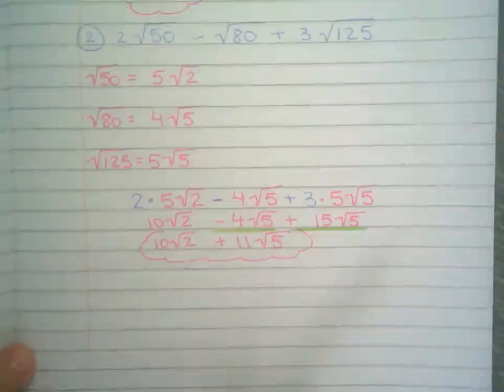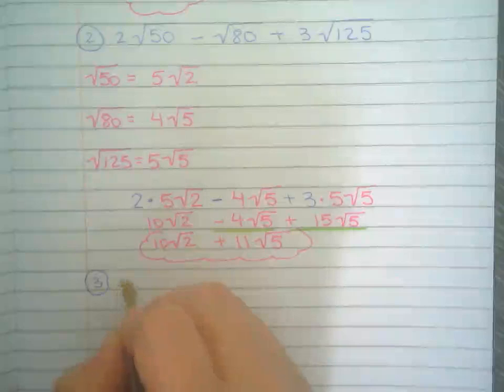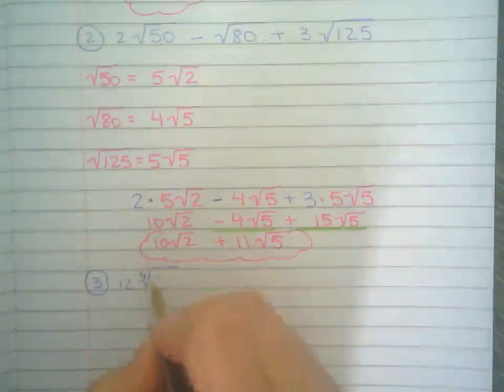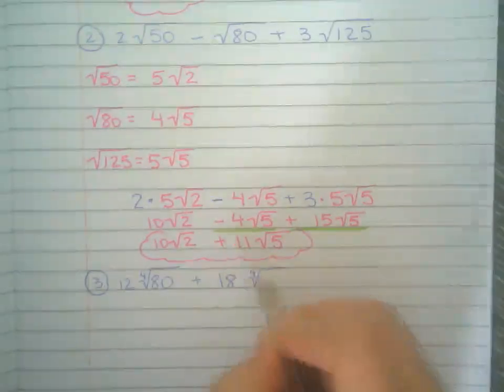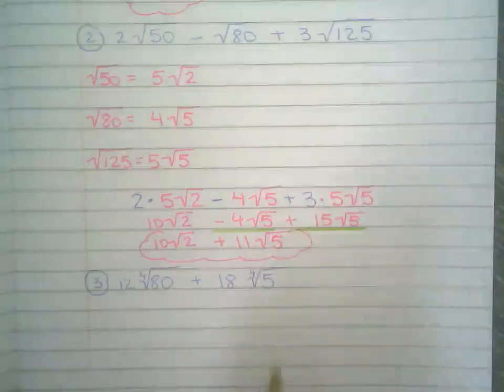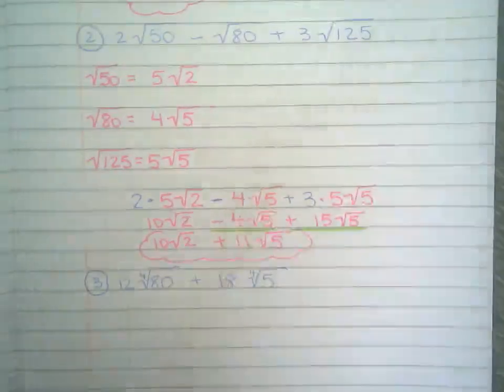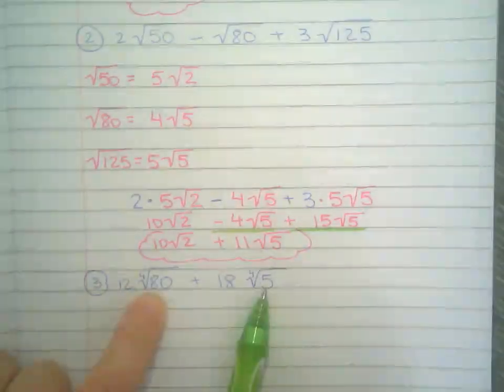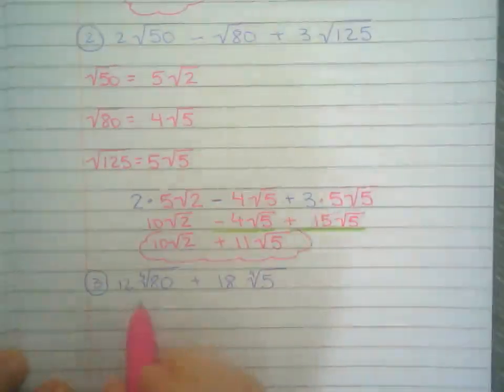One more, just because. Now we have 4th root of 80 and 4th root of 5. They do have the same index, but they don't have the same radicand. But I'm going to try to simplify 4th root of 80 anyways.